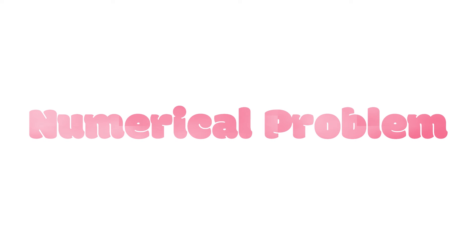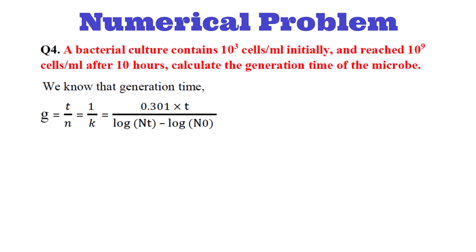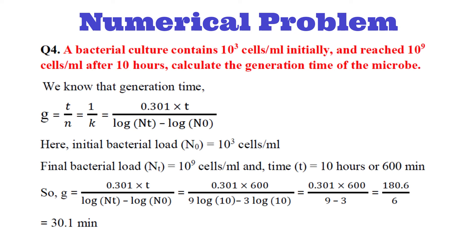It is time to solve another numerical problem. A bacterial culture contained 10³ cells per ml initially and reached 10⁹ cells per ml after 10 hours. Calculate the generation time. Initial bacterial load N₀ = 10³ cells per ml (3 log 10) and final bacterial number Nt = 10⁹ cells per ml (9 log 10), and time t = 10 hours = 600 minutes. Using the equation for g: g = (0.301 × t) / (log Nt − log N₀) = (0.301 × 600) / (9 − 3) = 180.6 / 6 = 30.1 minutes. That means the bacteria will divide after every 30.1 minutes.